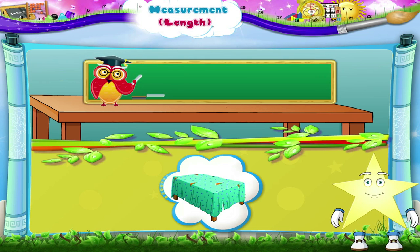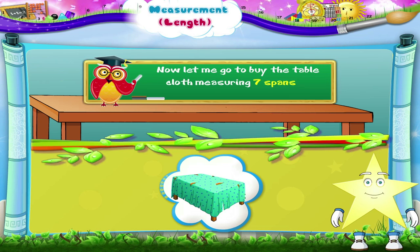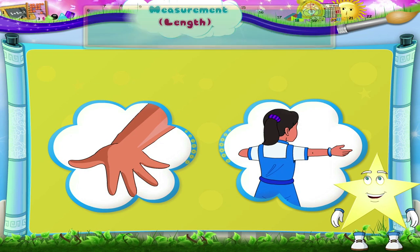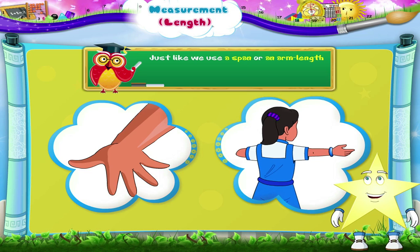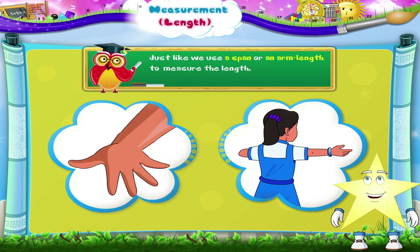Now let me go to buy the tablecloth measuring seven spans or three arm lengths. Starry, just like we use a span or an arm length to measure the length, we can also use the feet and pace for measuring lengths.